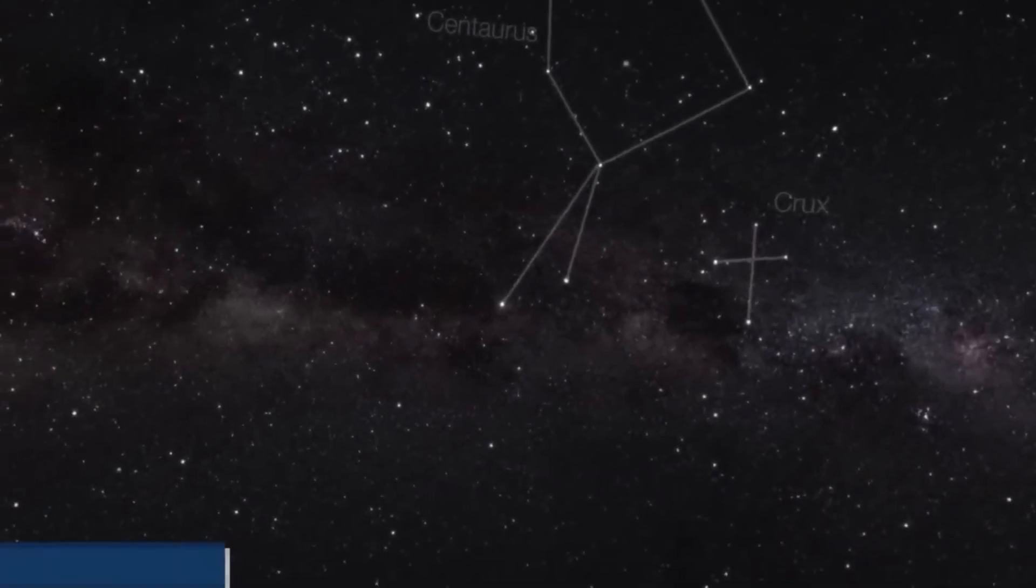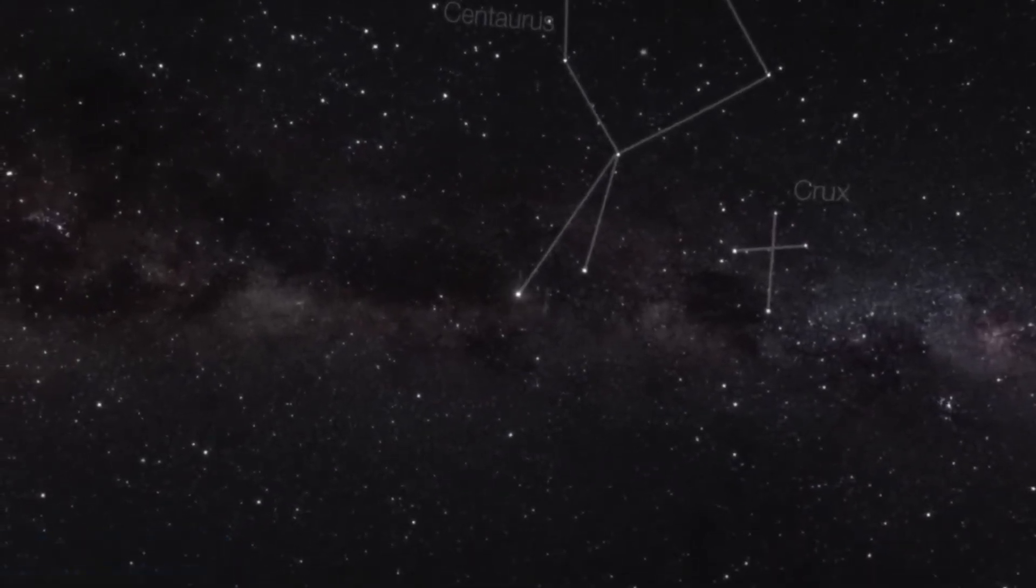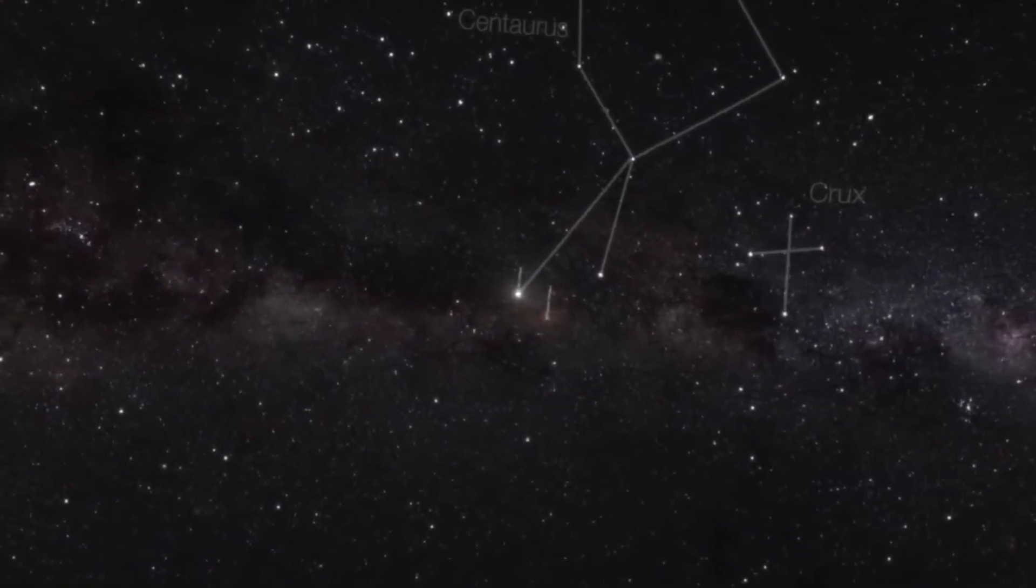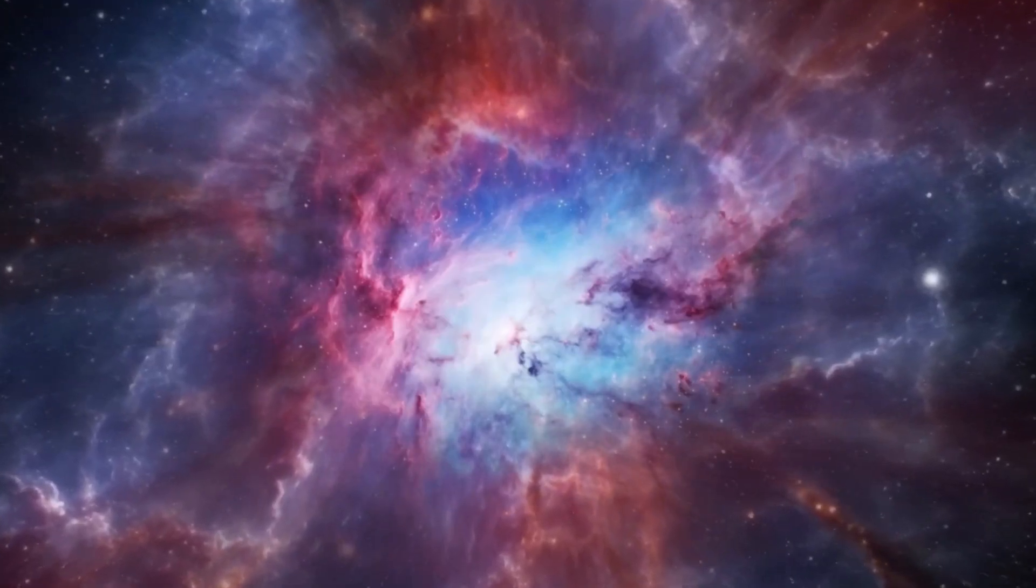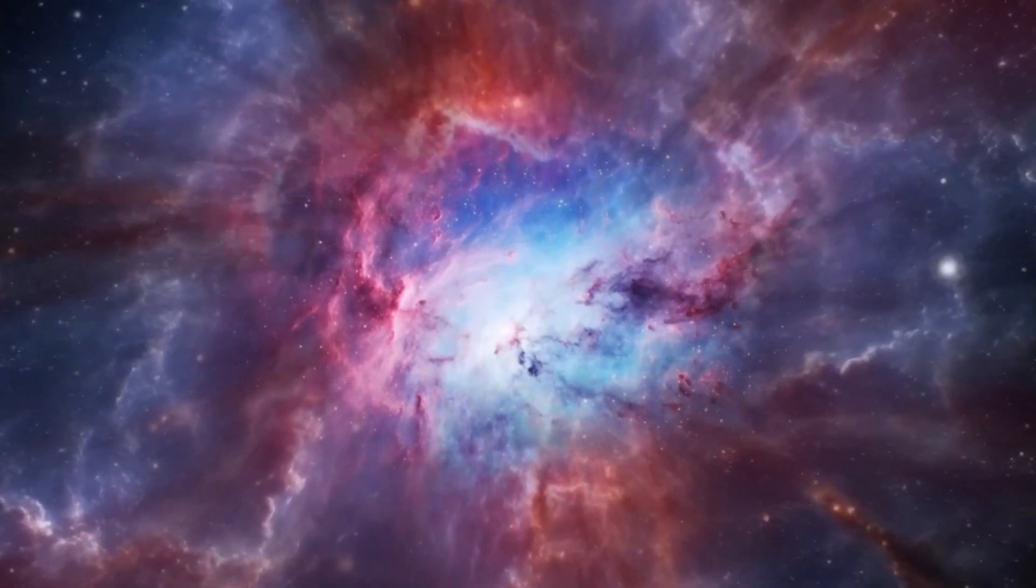Proxima b, located just 25 light-years away, is a planet where half is always blazing hot while the other side remains eternally frozen. This twilight world holds mysteries that we are only beginning to unravel.